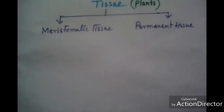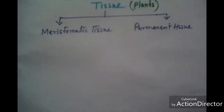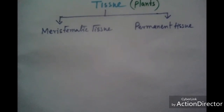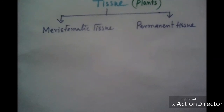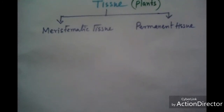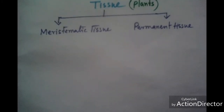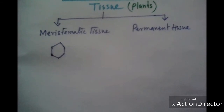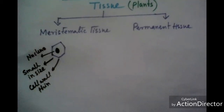Meristematic cells divide and re-divide, increasing the cell size in length, diameter, and so on. Meristematic tissue contains small cells, a large nucleus, a thin cell wall, and intercellular spaces are absent in meristematic tissue.